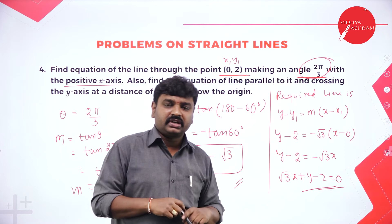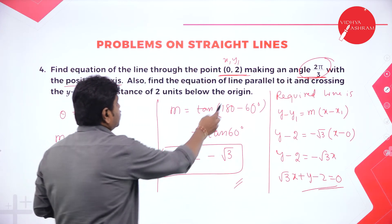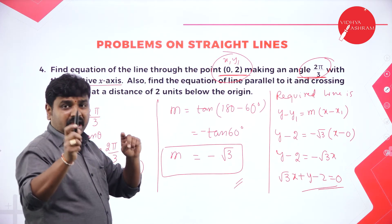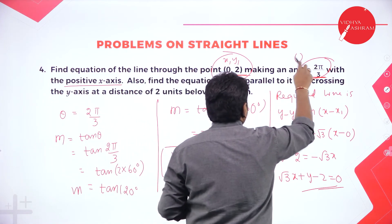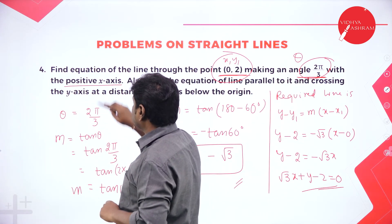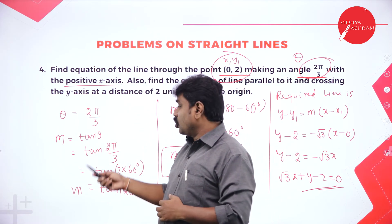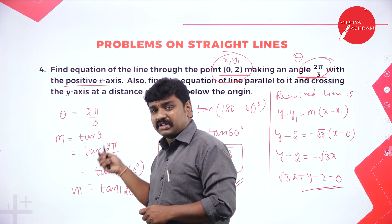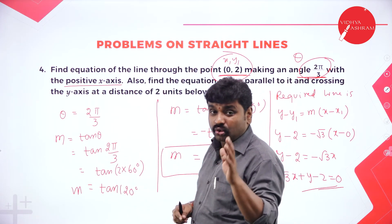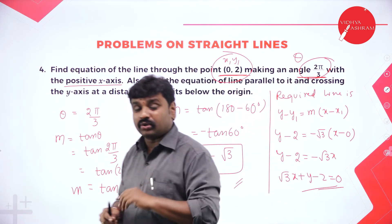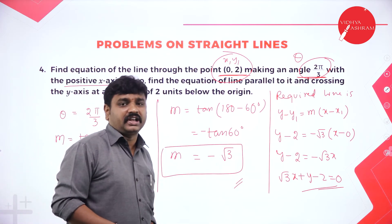They gave the point on the line as (0, 2) which is x1, y1, and gave angle made by the line. Angle gives slope via tan theta. Once you know slope and point, use point slope form: y minus y1 equals M into x minus x1. After substitution and simplification, you get the required equation root 3x plus y minus 2 equals 0.